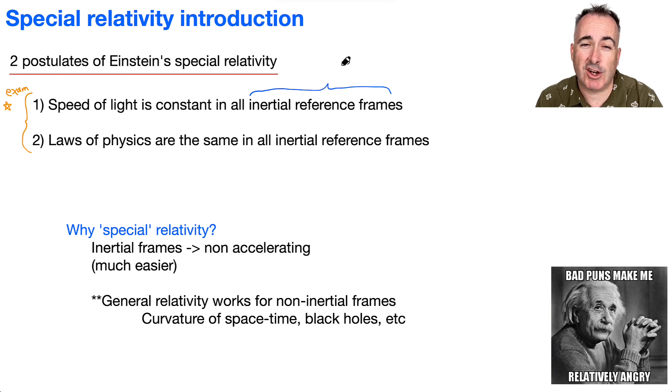And remember again what inertial reference frame means? It means it's not accelerating. Now you might think, hey, the speed of light is constant. Yeah, so what? But actually, this is really weird if you really think about it carefully.